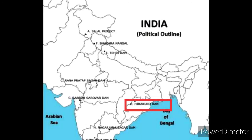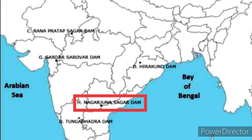Next is Hirakud Dam. It is built across the Mahanadi river in the state of Odisha. It is the longest dam in the world.